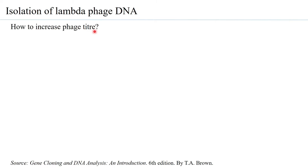How to increase the phage titer? One way is to let the bacteriophage infect a bacterial population growing in large vats or large cylinders containing 100 to 1000 litres of media. This gives a high biomass of bacteria, and if you have a high biomass there are more chances of the bacteriophages infecting the bacteria, multiplying, and then getting released into the supernatant. However, the volume in which the suspended bacteriophage resides is very difficult to handle.